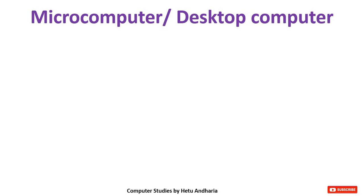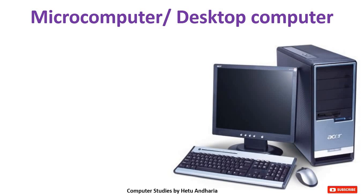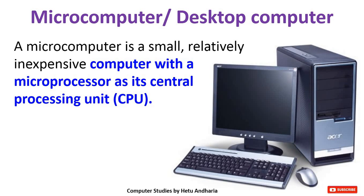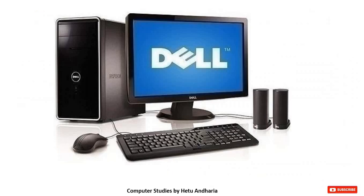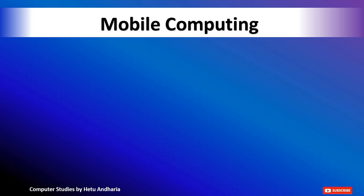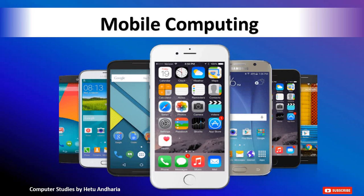Next comes the microcomputer or desktop computer, which we are using today. A microcomputer is a small, relatively less expensive computer with a microprocessor as its central processing unit. Then comes mobile computing — a smartphone is one type of computer. You can do most of the functions available in a computer on a smartphone nowadays.